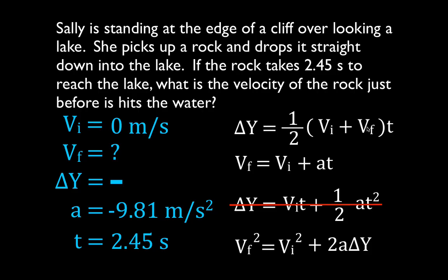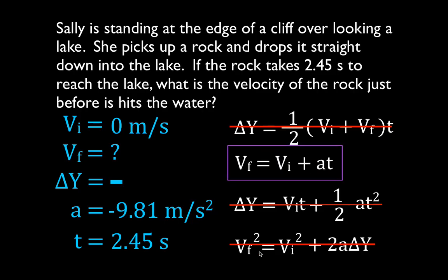We have to go through each of the remaining equations since they all have the final velocity. For the first candidate: does it have the final velocity? Yes. Do we know the time? Yes. Do we know the initial velocity? Yes. But we don't know the change in position, so we cannot use that equation. The next equation: does it have the final velocity? Yes. Do we know the initial velocity, the acceleration, and the time? Yes to all three. Therefore, we can use this equation. The other equation has the change in position, so we can't use that one. This is the equation we're going to use.